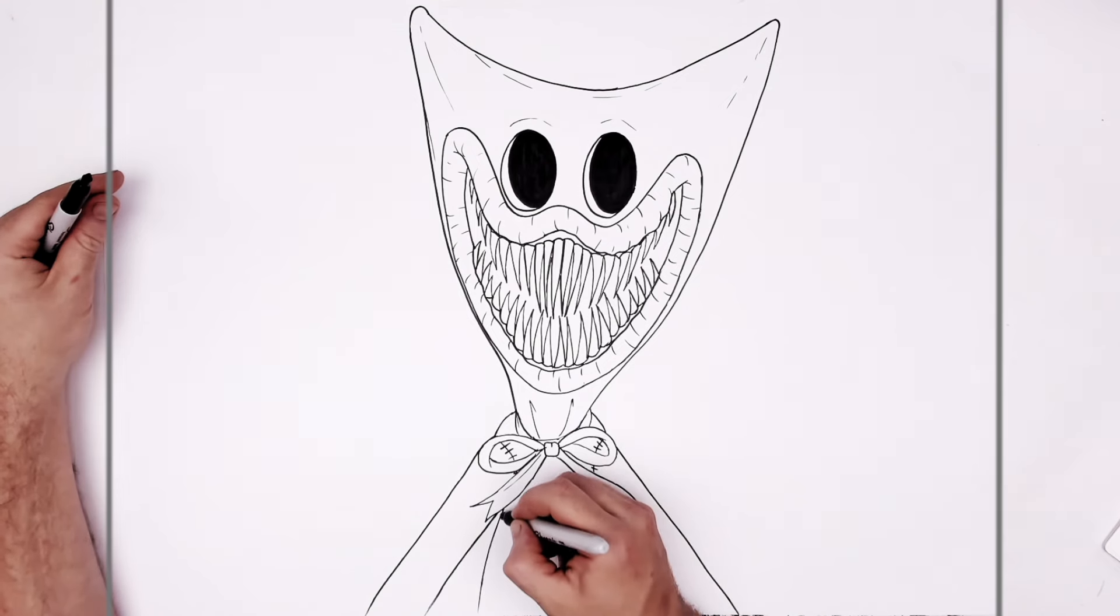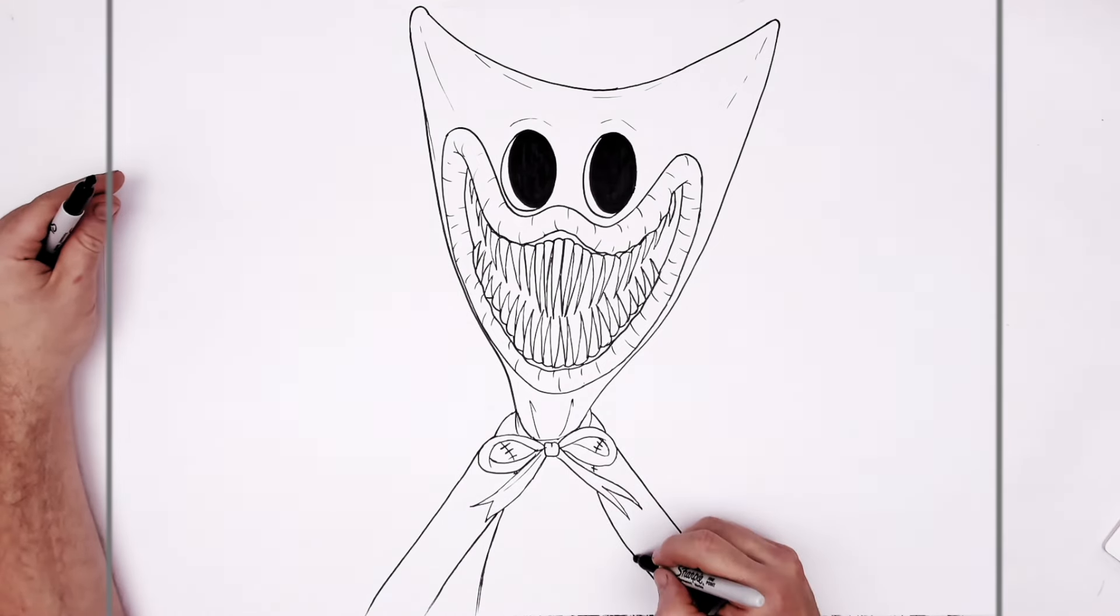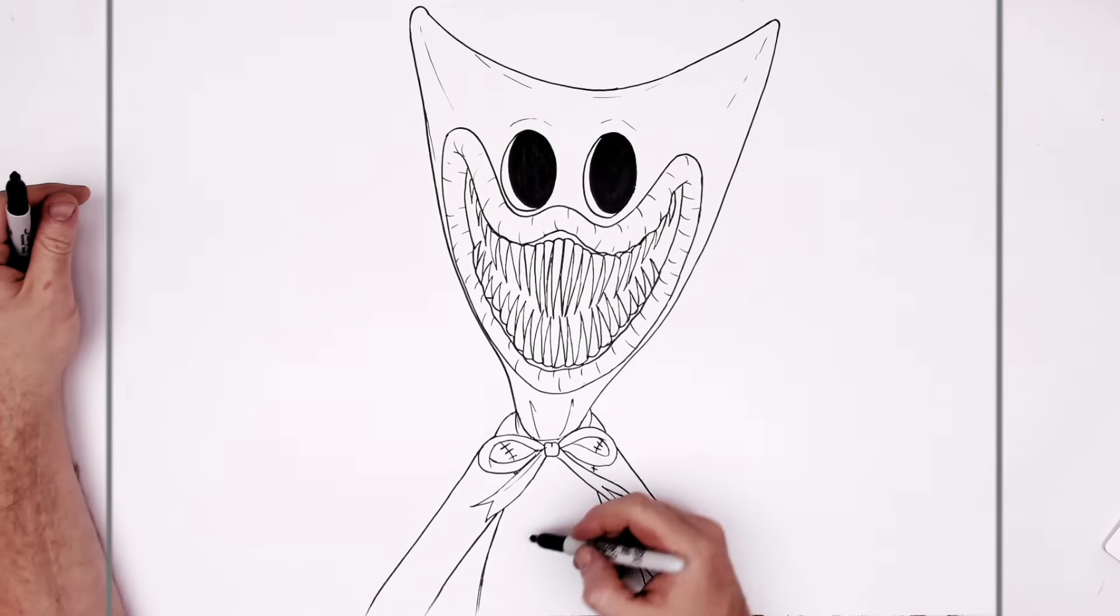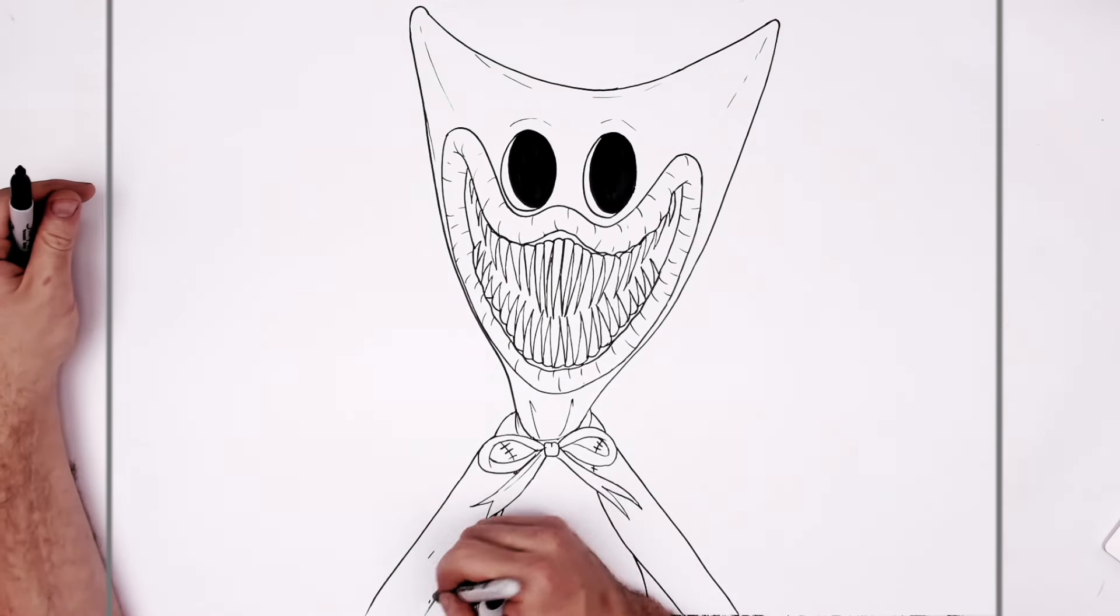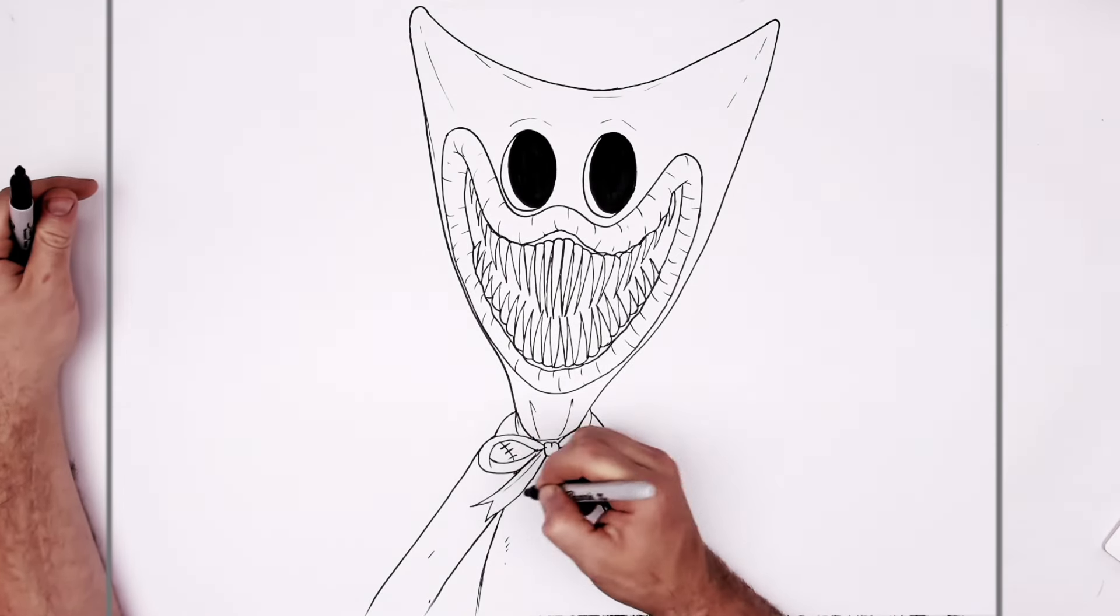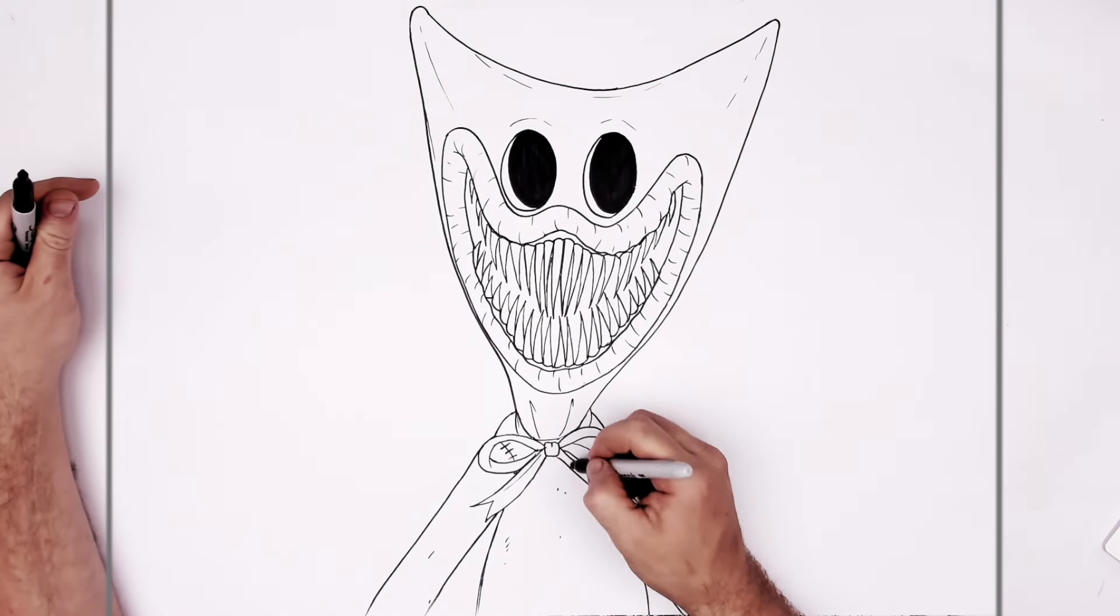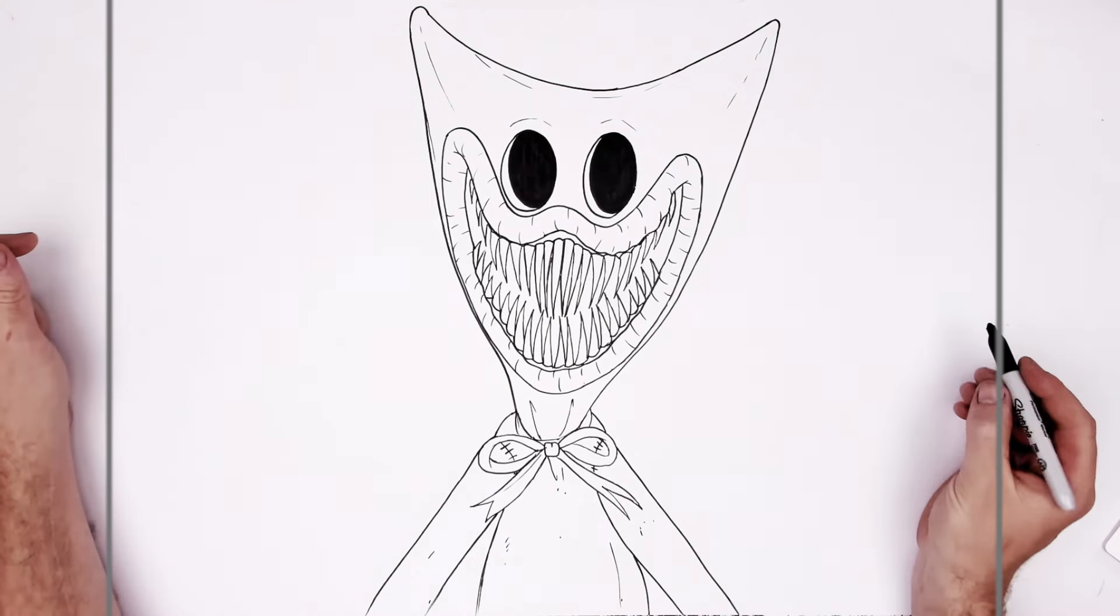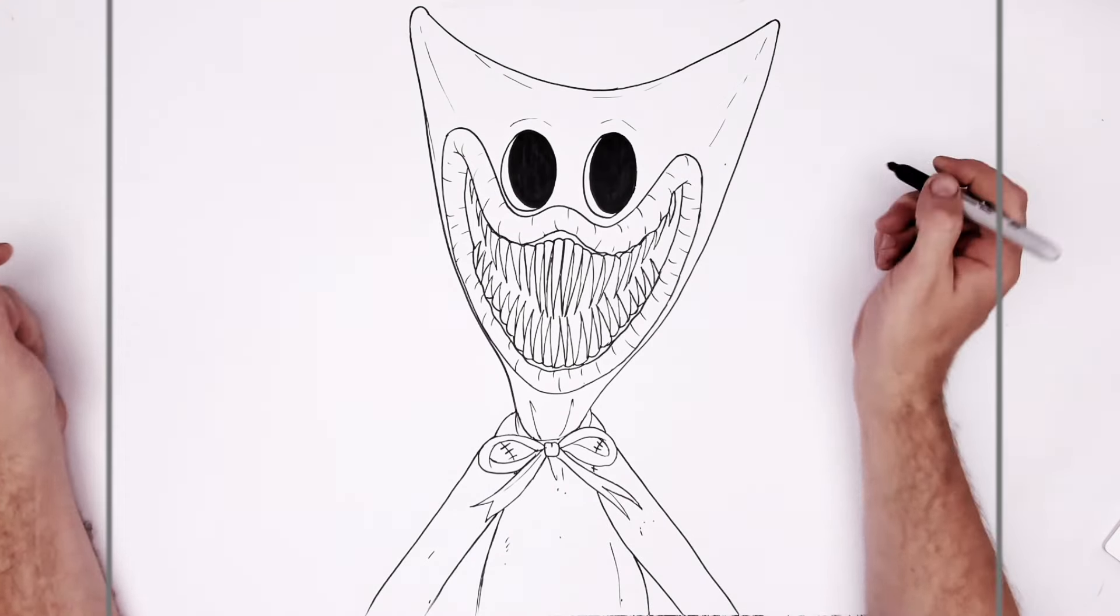And then the body sort of like just round sort of here. And he's kind of like dirty, like he's not clean. So little textures like that help. There you go.